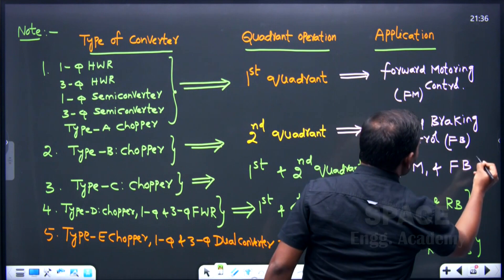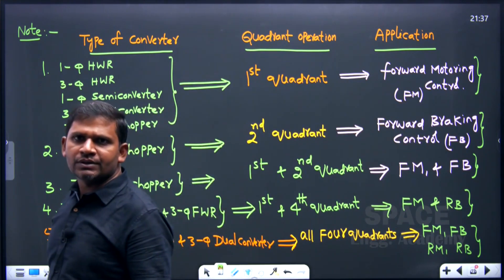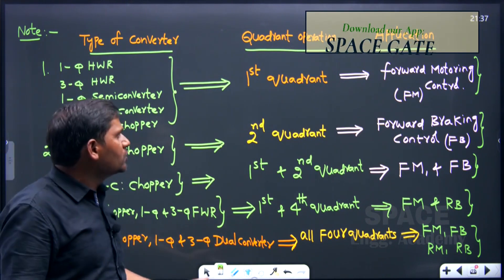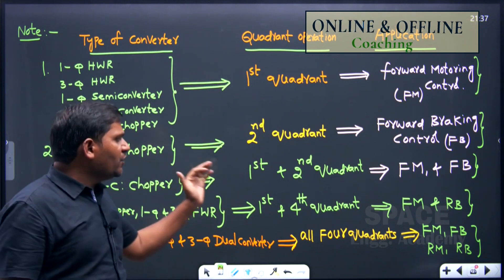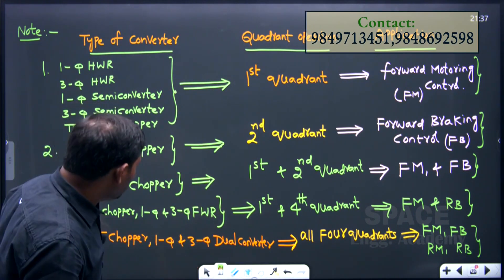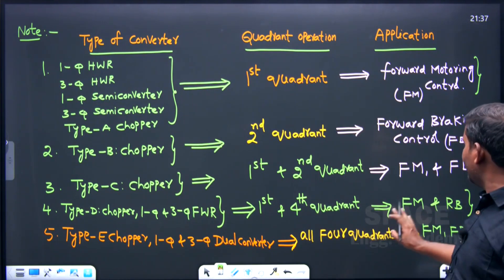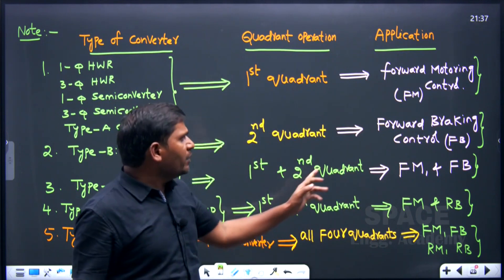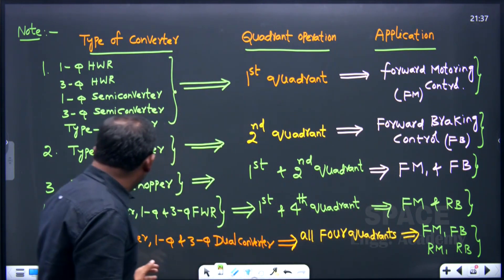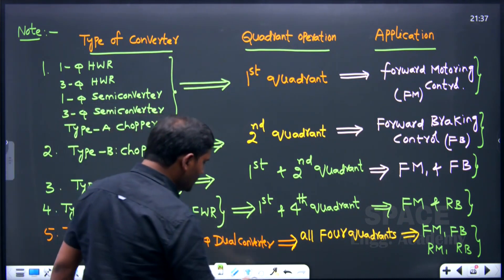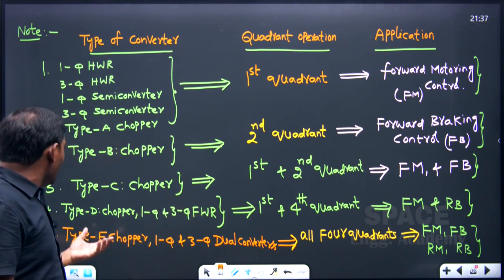From an application point of view, this tabular column is very important — mainly for PSU exams, ESC exams, and state government job exams. Questions may be asked like: 'Type B chopper is operated in which quadrant?' or 'Single phase full wave rectifier is operated in which quadrant?' To summarize: first quadrant means forward motoring; first and fourth quadrant means forward motoring and reverse braking; first and second quadrant means forward motoring and forward braking; all four quadrants means forward motoring, forward braking, reverse motoring, and reverse braking — that is Type E chopper and single phase and three phase dual converters.